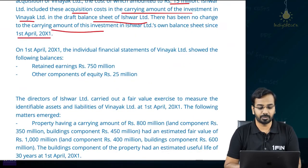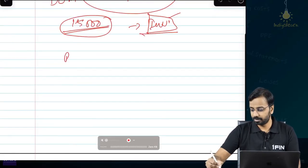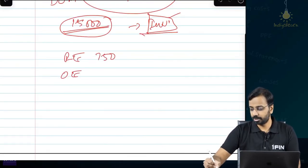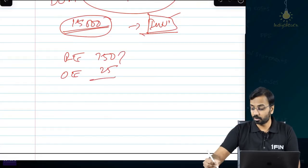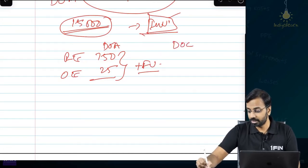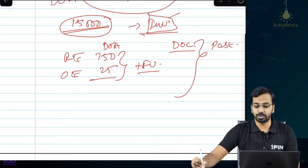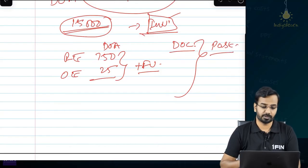On 1st April of year 1, the individual financial statements of Vinayak Limited showed the following balances: retained earnings 750 million, other components of equity 25 million. This is on the date of acquisition. To this we have to carry out any fair value adjustment, then compare that with the date of consolidation, and this will give us the post-acquisition profits.